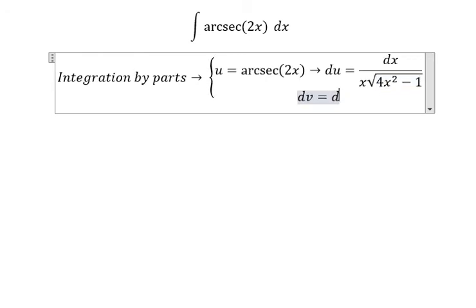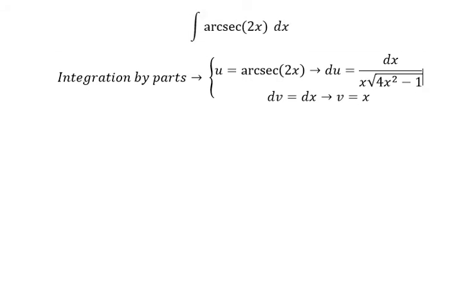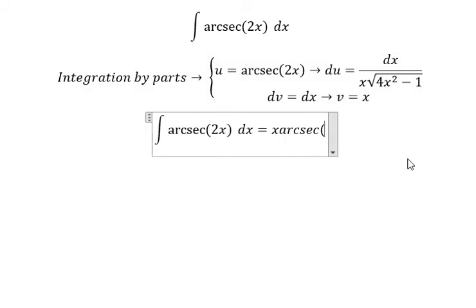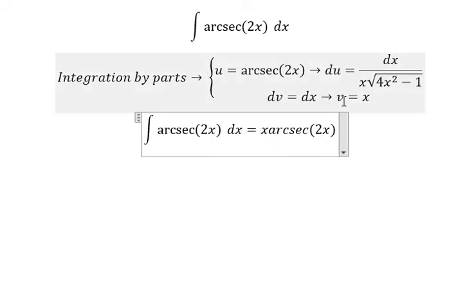dv equals dx, so v equals x. So we have u multiplied with v and u multiplied with v.